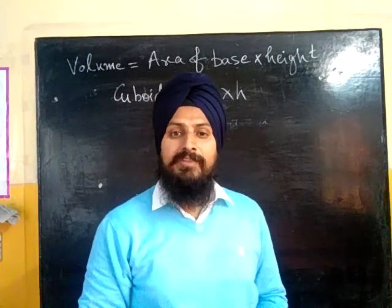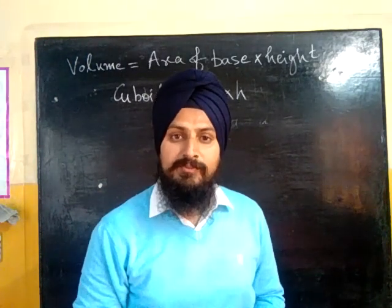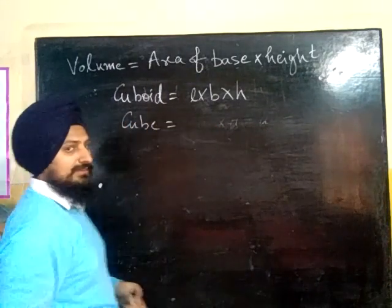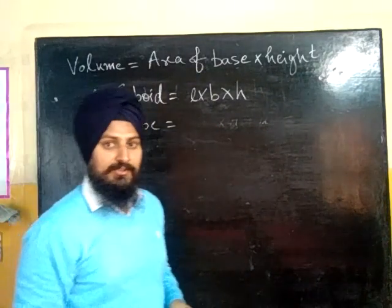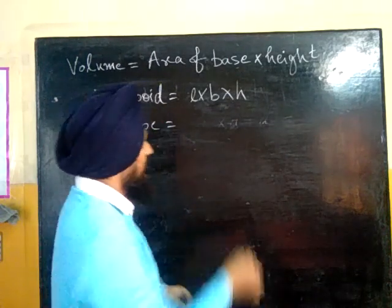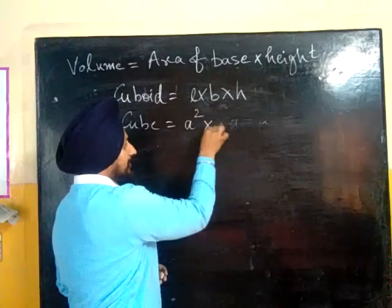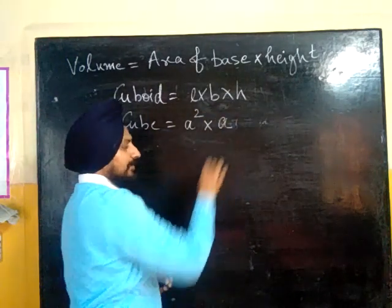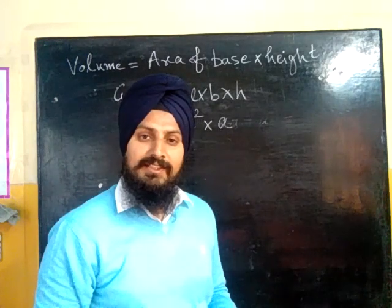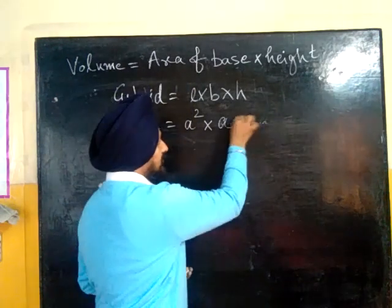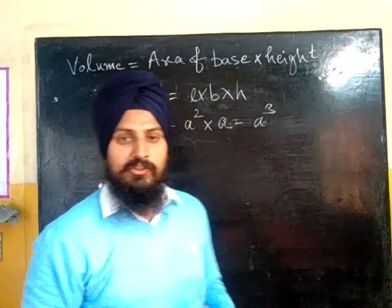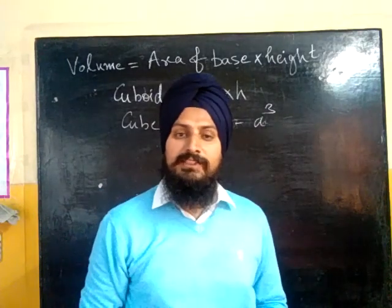The same pattern we can use for a cube. What is the area of the base of a cube? That is a square, so it is a squared. Multiplied by a, because in a cube the height is also a. A squared multiplied by a equals a cubed. So the volume of a cube is a cubed.